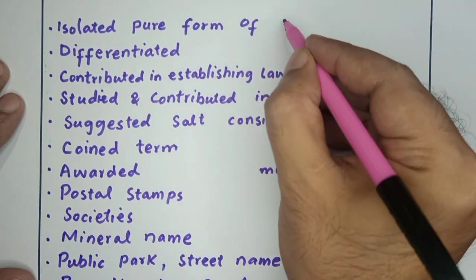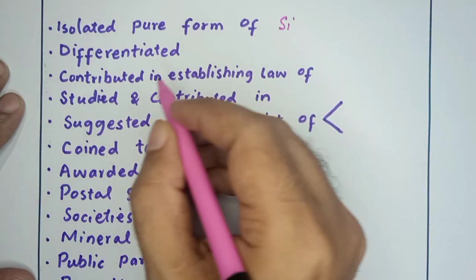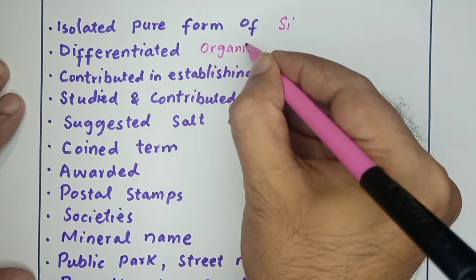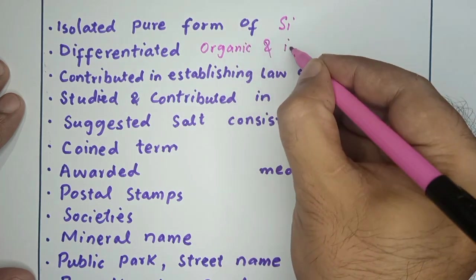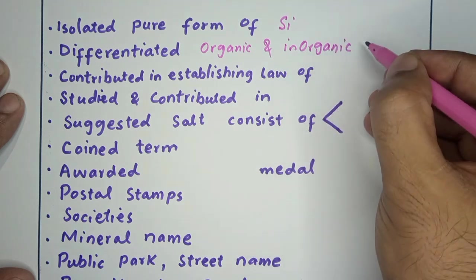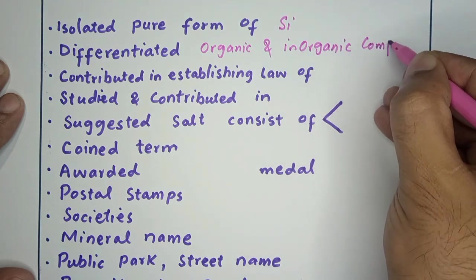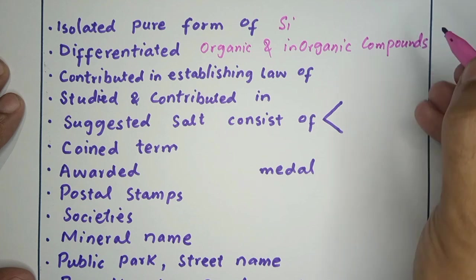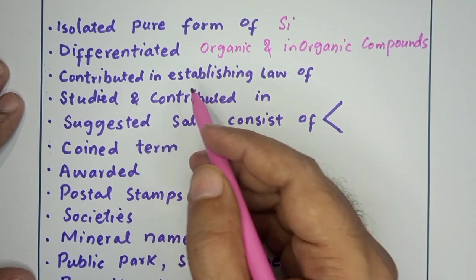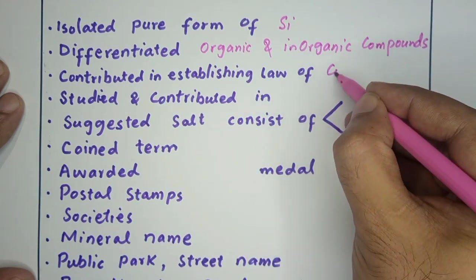Jacob Berzelius has differentiated organic and inorganic compounds. He has done a lot of experiments and contributed in establishing law of constant proportions.